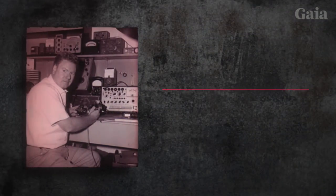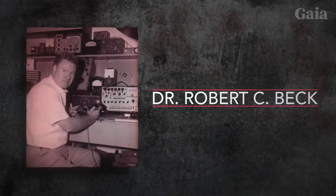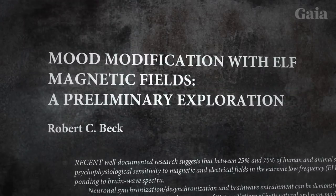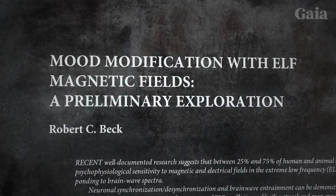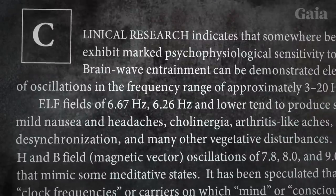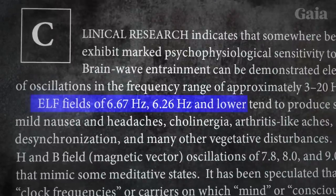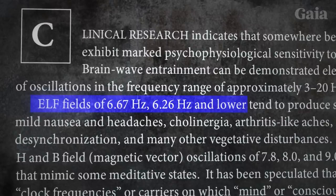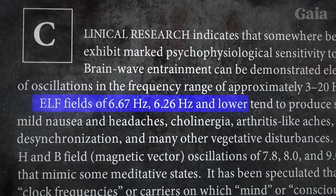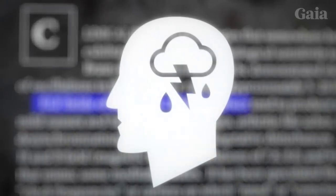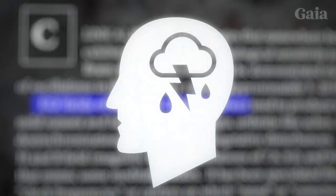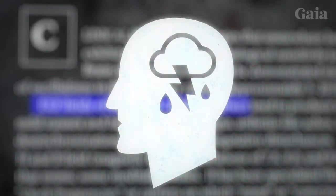Back in 1978, research physicist Dr. Robert C. Beck published preliminary research on the effects of extremely low-frequency magnetic fields on the moods of human subjects. ELF fields of 6.67 Hz, 6.26 Hz, and lower tend to produce symptoms of confusion, anxiety, depression, tension, fear, mild nausea, and headaches.